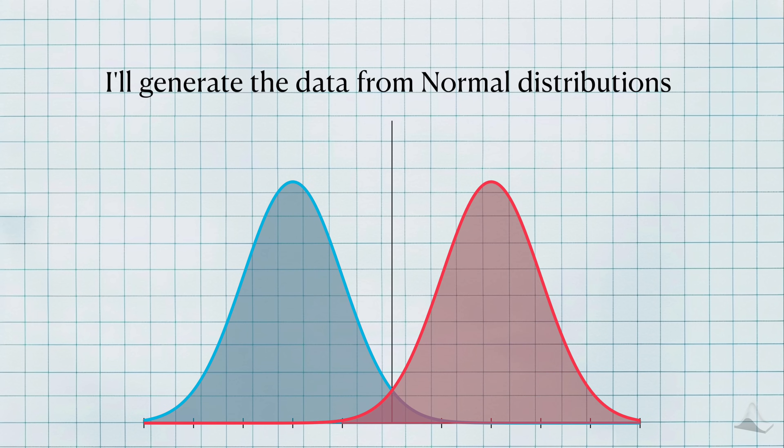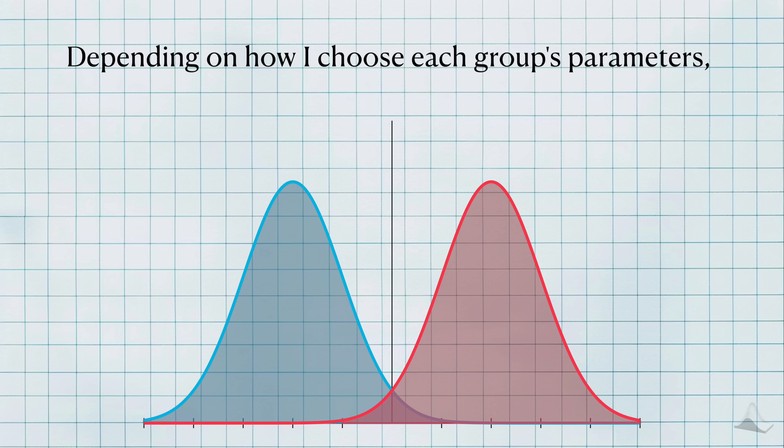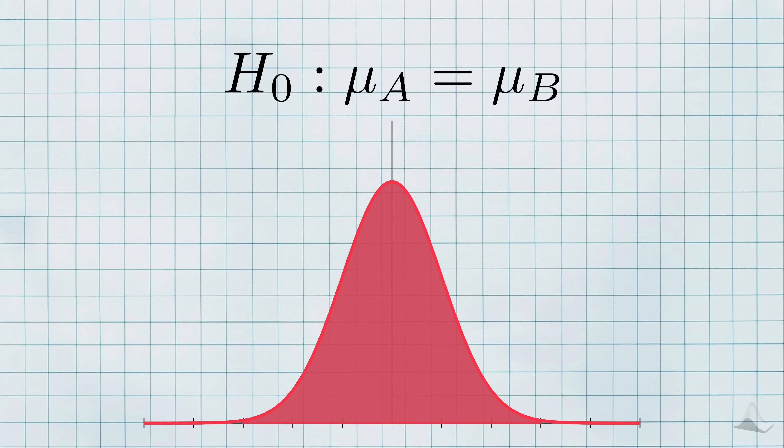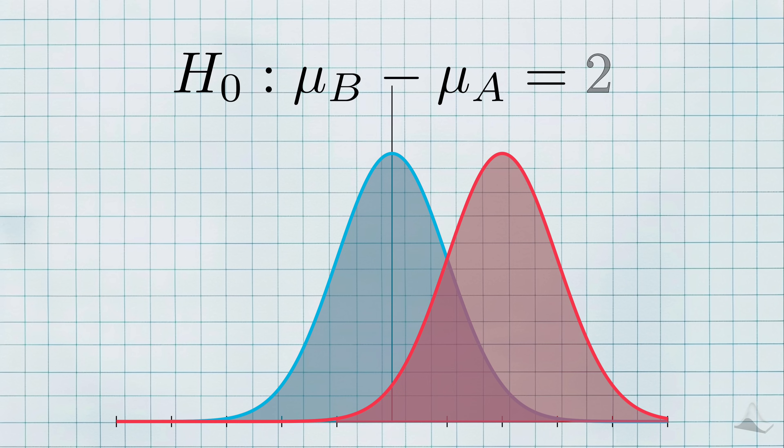Since I'm working with the two-sample t-test, I need to generate data from two groups. Here, I'll simulate the data for each group from a normal distribution for reasons that will become clear soon. Depending on how I choose the parameters for each group, I can control which hypothesis is true. On one hand, I can simulate a situation where the null hypothesis is true, and the population means are the same. Or, I can generate the data from a specific alternative hypothesis, and make their population means different.